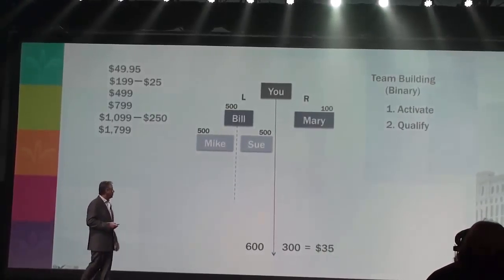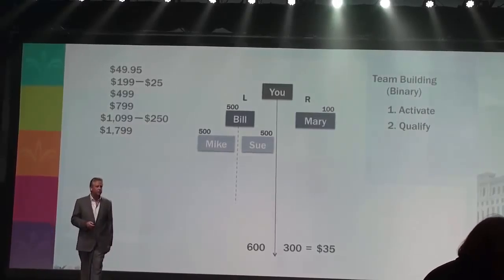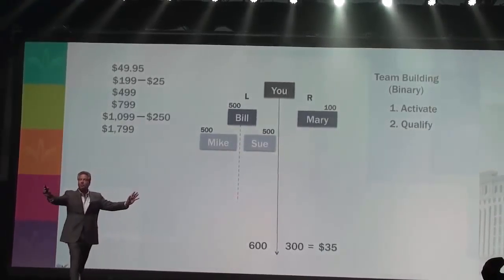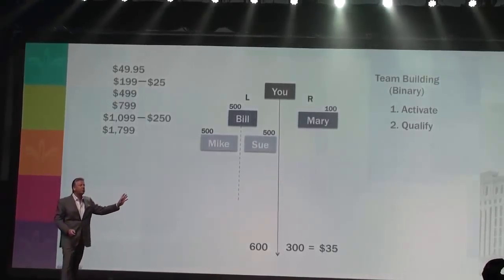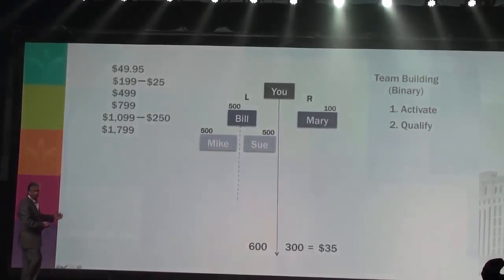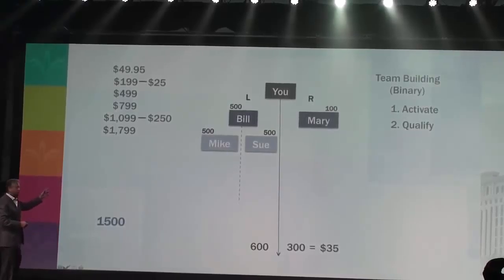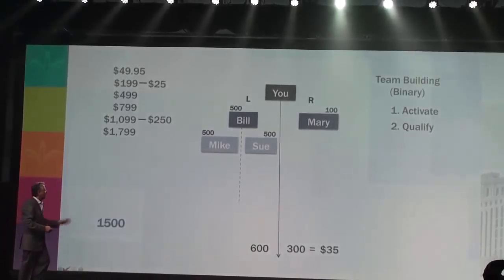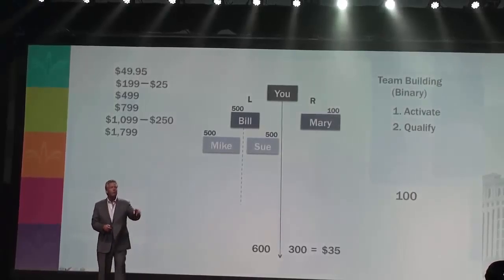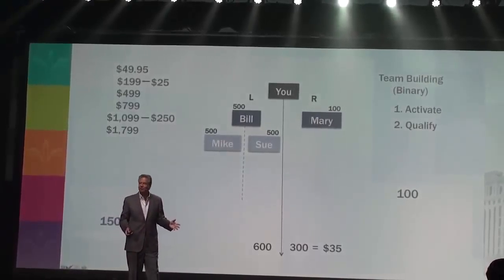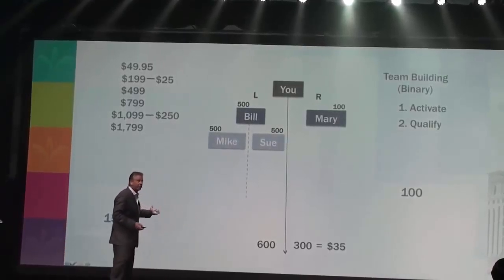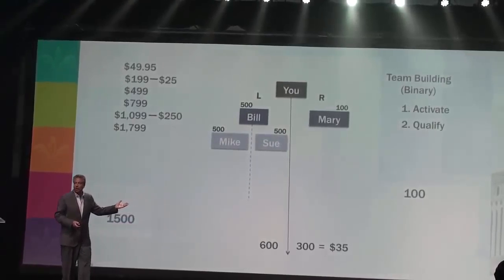Every time that happens, around the clock, you get a $35 cycle bonus. In our example here today, how many points have we got on our left team so far? 1,500 — Bill, Mike, and Sue at 500 apiece. How many points on our right team so far? 100 points from Mary's order. Have we made a cycle bonus yet? No — we have 1,500 on the left but not yet enough on the right.